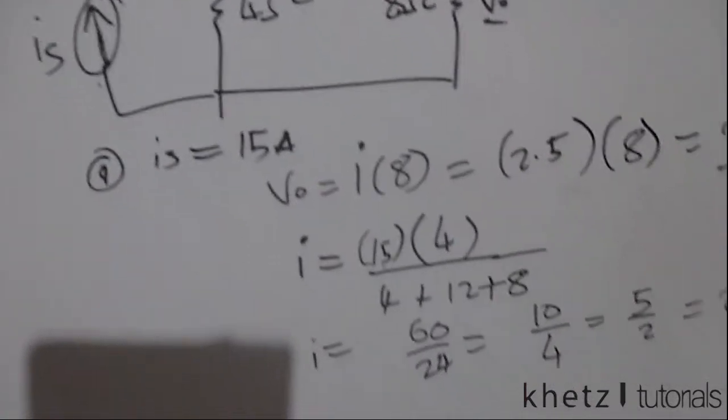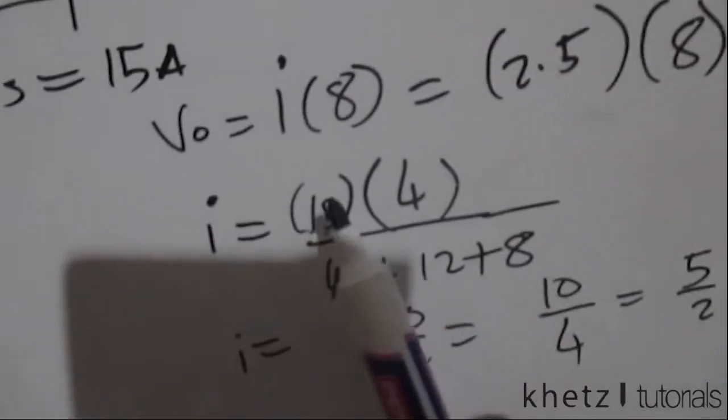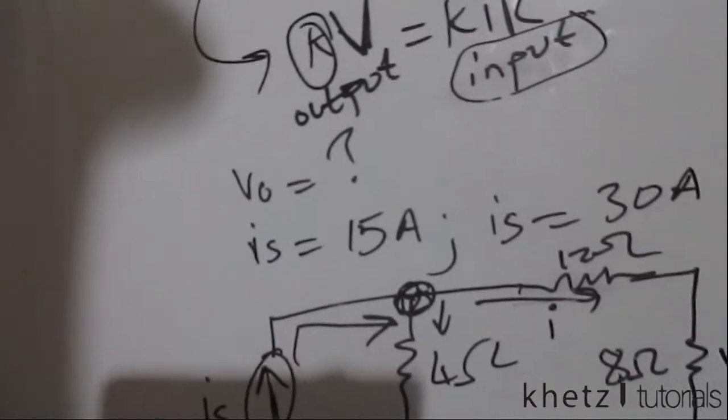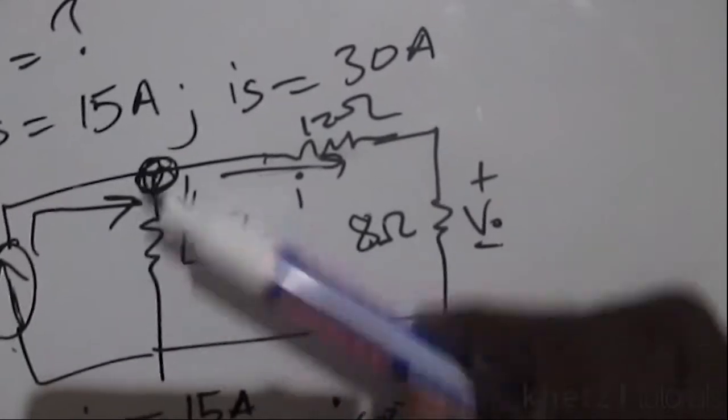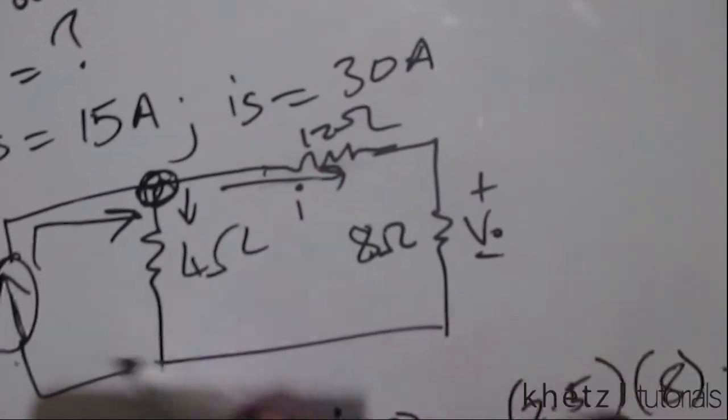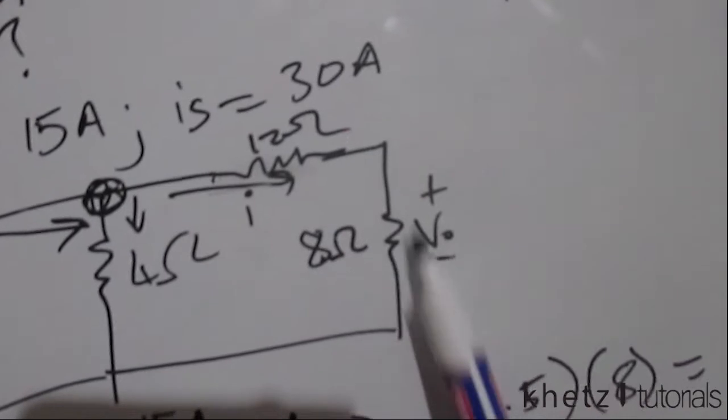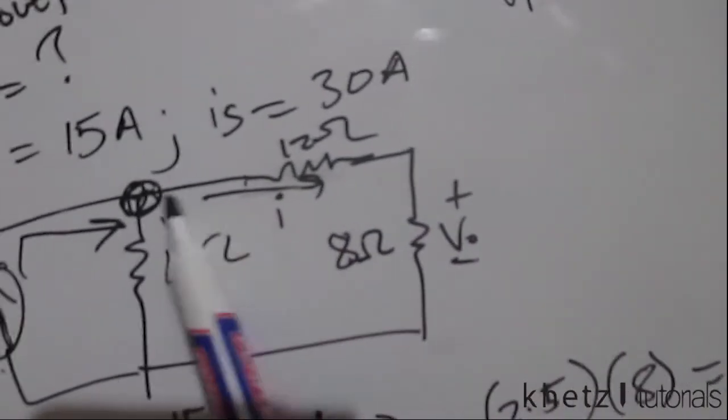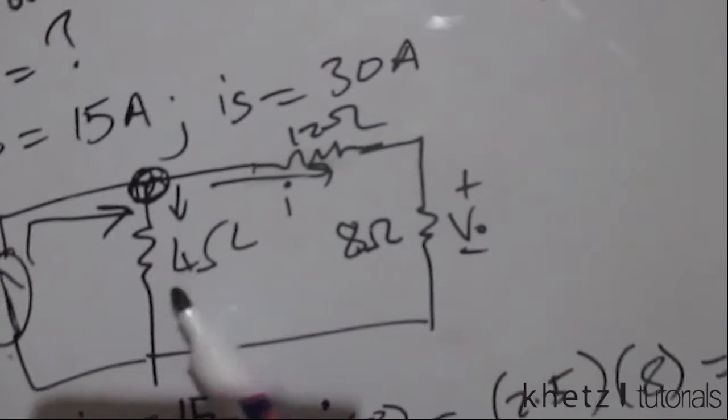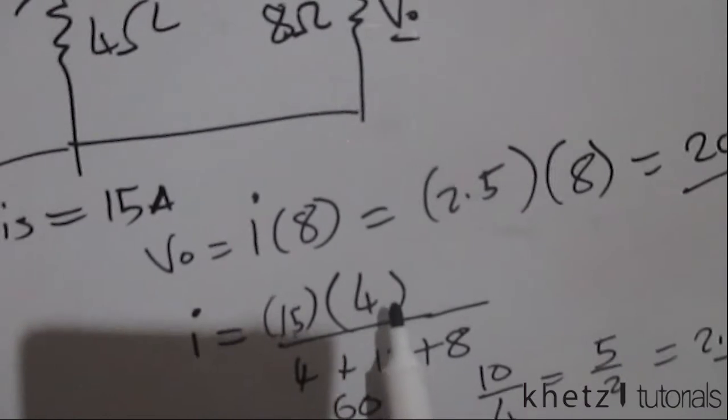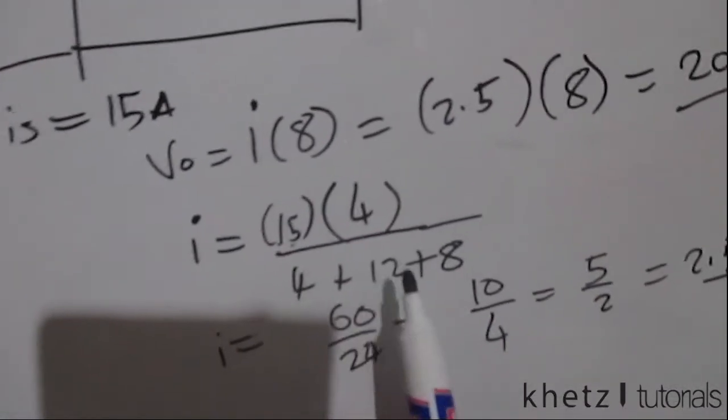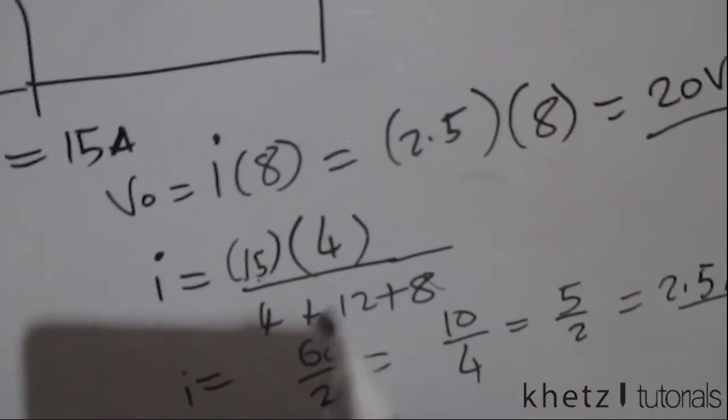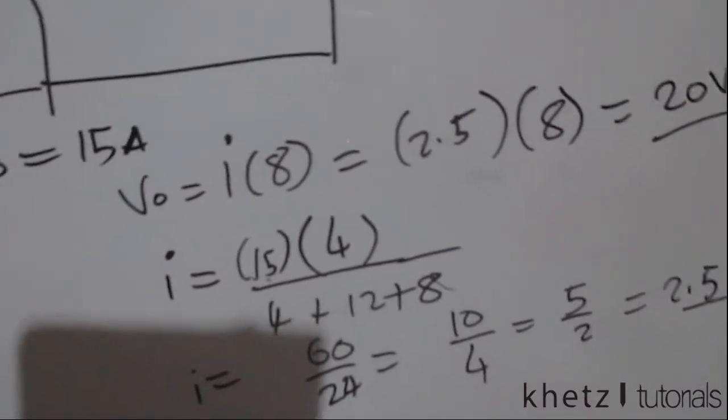If you remember, in current division, we multiply the IS, which is 15 for the first part, multiply the IS by the other side which we aren't interested in. So we aren't interested in the current which goes there, we're actually interested in the current that goes that side. But to find the current that goes that side, you actually multiply by the one which you aren't interested in, which is in parallel with your other side. So that's why we have IS multiplied by 4 and then we divide by everything which is in parallel with each other, which is 4 plus this combination.